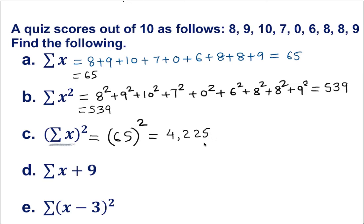Okay, let's move to letter D. Sum of X plus 9. Remember, there is no parenthesis, so we've got to find the sum of X first. We already know sum of X is 65, so just plug it in here. So 65 plus 9, that's it. 65 plus 9, which is 74.